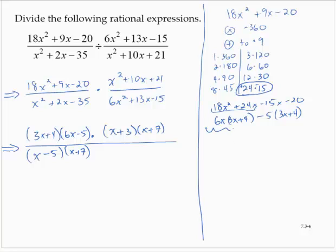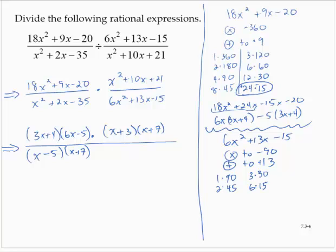And then that last one there, 6x² + 13x - 15. Let's do a little side work for that one also. 6 times negative 15 is negative 90. We need to multiply to negative 90 and add to 13, positive 13. Let's see. So we have 1 and 90, 2 and 45, 3 and 30, 6 and 15, 5 and 18.